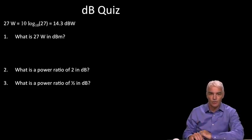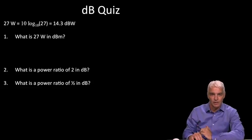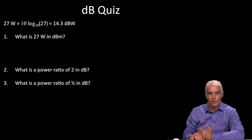So, now let's take a short quiz just to make sure that you've got this and get some basic dB values in your head. We've just seen that 27 watts has a dBW value of 14.3. First question in the quiz: what is 27 W in dBm? Second question: what is a power ratio of 2 in dB? And the third question: what's a power ratio of ½ in dB? So, you can do this quiz yourself, and we'll come back and do the answers.